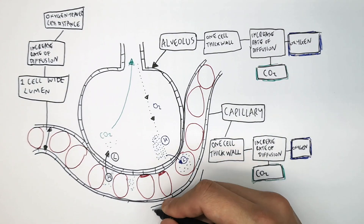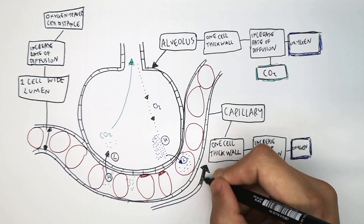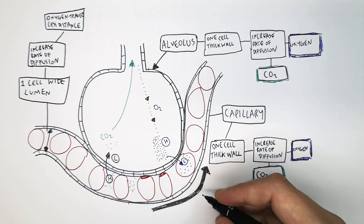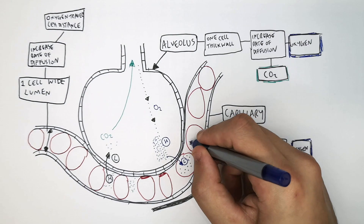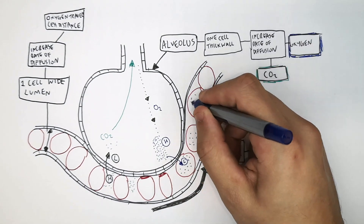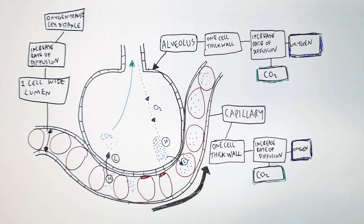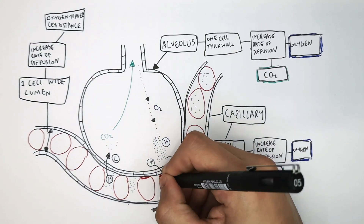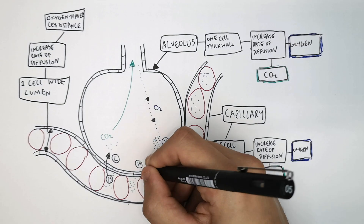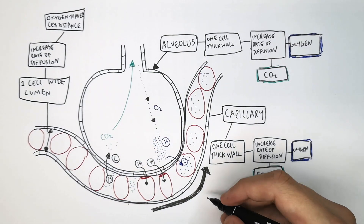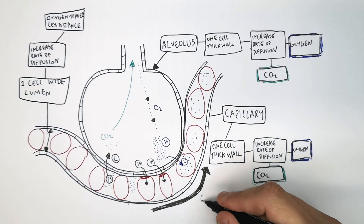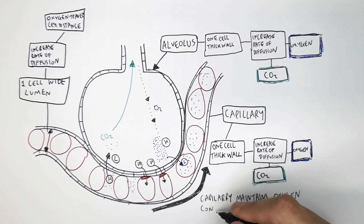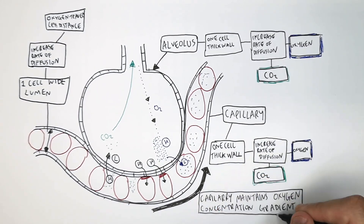The capillaries are going to constantly take the red blood cells away from the alveoli — they're going to transport the blood away. This means that the high-concentration red blood cells, the erythrocytes, will be taken away and replaced with red blood cells with a low concentration of oxygen. Therefore the capillary will maintain the oxygen concentration gradient.